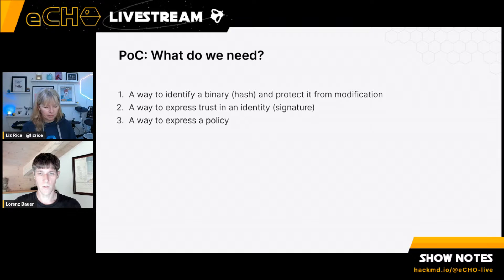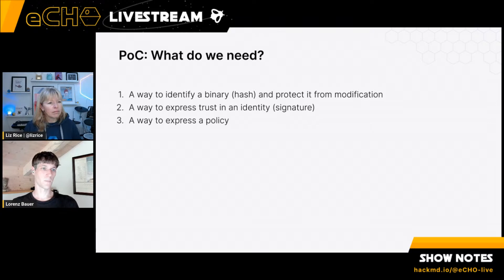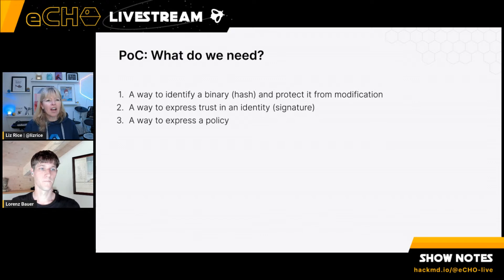I built a proof of concept and made a little shopping list of three things we need: an identity for the binary — usually a hash like SHA-256; a way to say we trust this hash — usually a signature; and a way to express a policy. The way I use 'policy' here has a slightly different meaning than the cloud-native idea, but they're trying to achieve very similar goals. There are parallels to cloud-native tools like Notary or Cosign, where containers are identified by hash.